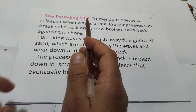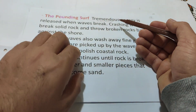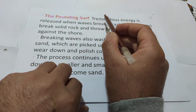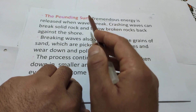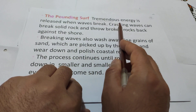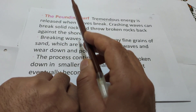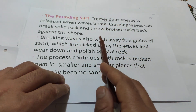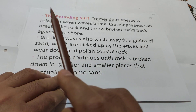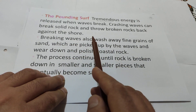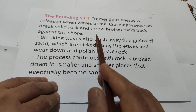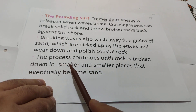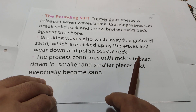The pounding surf releases tremendous energy — meaning very large, very big energy — when a wave breaks. Crushing waves can break solid rock and throw broken rocks back against the shore. Breaking waves also wash away fine grains of sand, which are picked up by the waves and wear down and polish coastal rock. This process continues until rock is broken down into smaller and smaller pieces that eventually become sand.